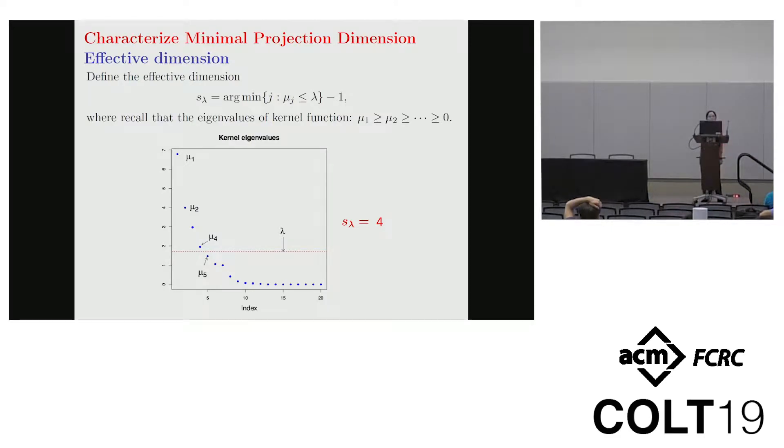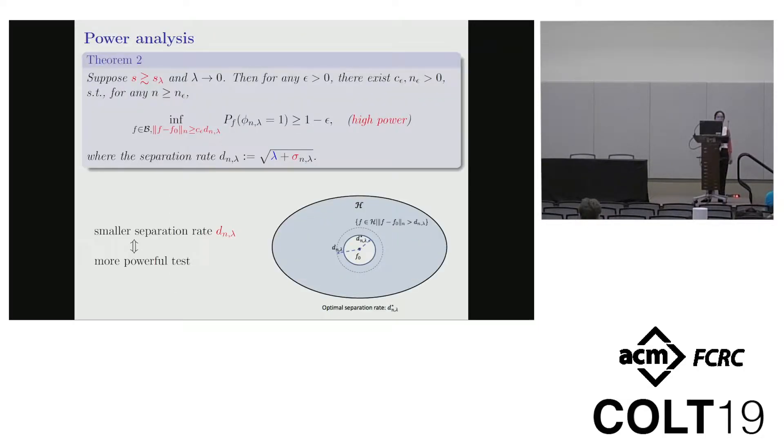So here, in order to characterize the minimal projection dimension, we introduce the effective dimension. The effective dimension is the number of eigenvalues that are greater than tuning parameter lambda. In this sense, we want to figure out the most important information represented by the leading eigenvalues. And then the left part will be viewed as the less important information and we can ignore it in our testing procedure. This is why random projection can work. Intuitively, from the random projection, we want to guarantee the most important information are kept and we can ignore the less important information.